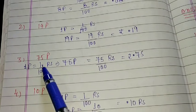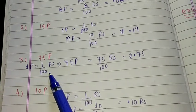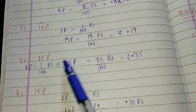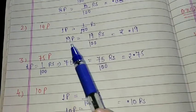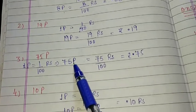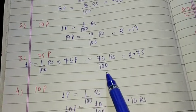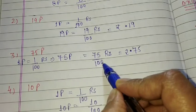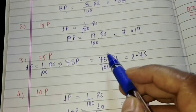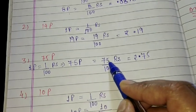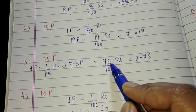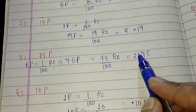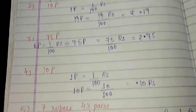75 paisa: 1 paisa is equal to 1 upon 100, and if we want to convert this into rupees, we have to divide 75 by 100. We get the answer because downside 2 zeros are there, so upside also we will put point before 2 numbers — 1, 2 — and then we will put the point.